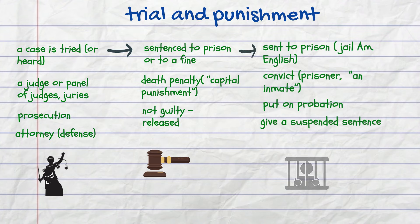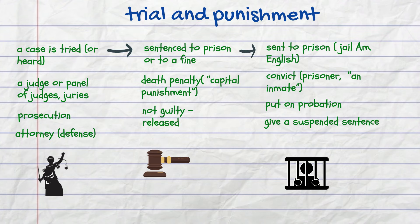If a person is sent to prison or to jail in American English, he or she becomes a convict or a prisoner, or also called an inmate. For less serious crimes, people might be put on probation, which means a release under supervision on condition that a person behaves well, or given a suspended sentence.